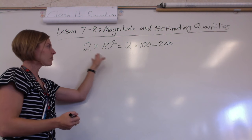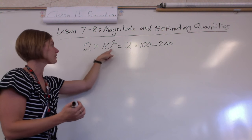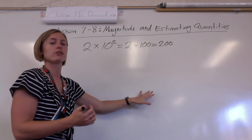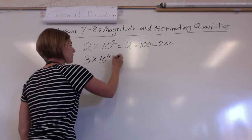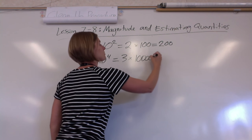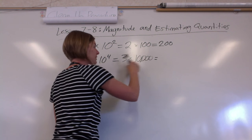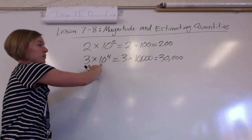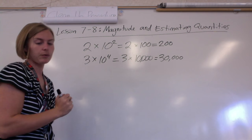Right now this might not seem shorter, but as I go through more examples you'll see that writing it in this form can actually be a shorter way of writing really big or small numbers. What if we had 3 times 10 to the fourth? Well that's 3 times one followed by four zeros — that's ten thousand. So it's 3 times ten thousand, which is thirty thousand. And now it's looking like writing 3 times 10 to the fourth is a bit more realistic than writing thirty thousand.